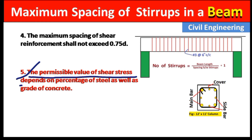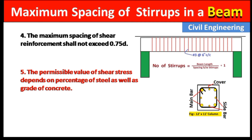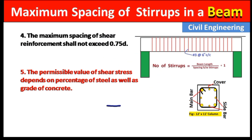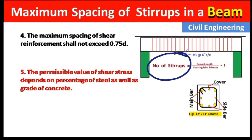Point five: the permissible value of shear stress depends on the percentage of steel as well as the grade of concrete. The IS code states that the maximum spacing should be 0.75d, but if we increase the strength of the concrete or the percentage of steel in the beam, we can also increase the spacing between the stirrups.